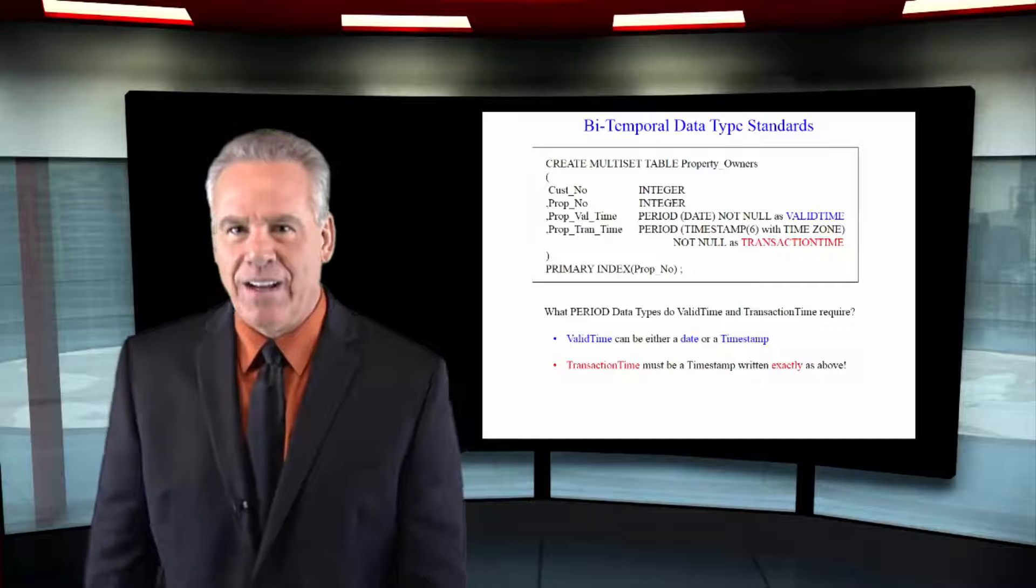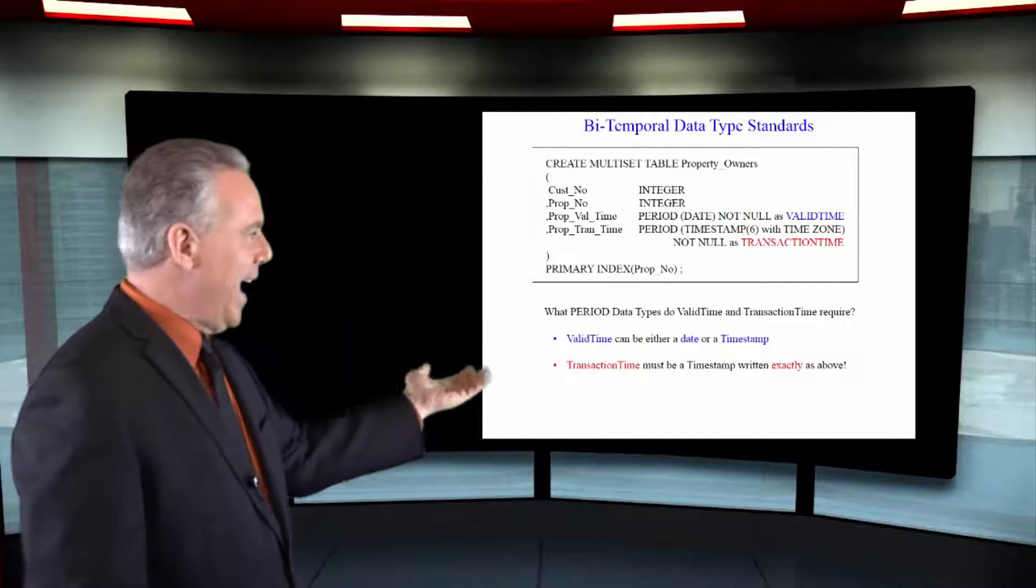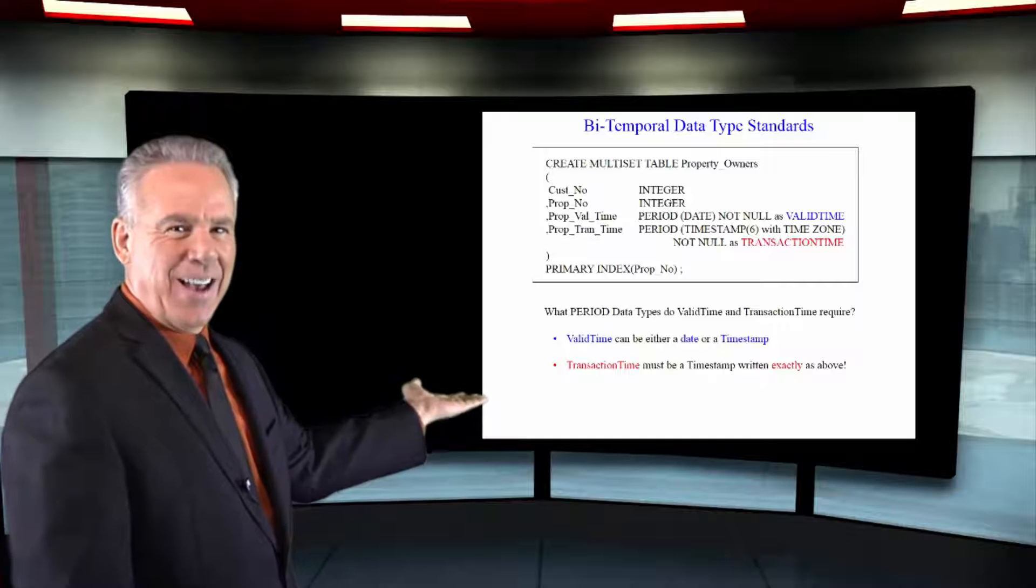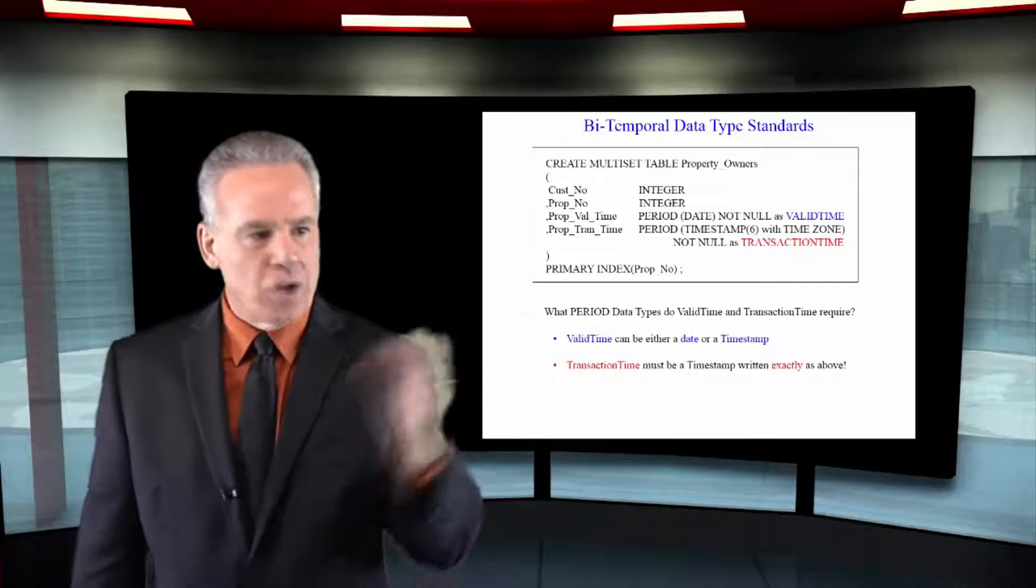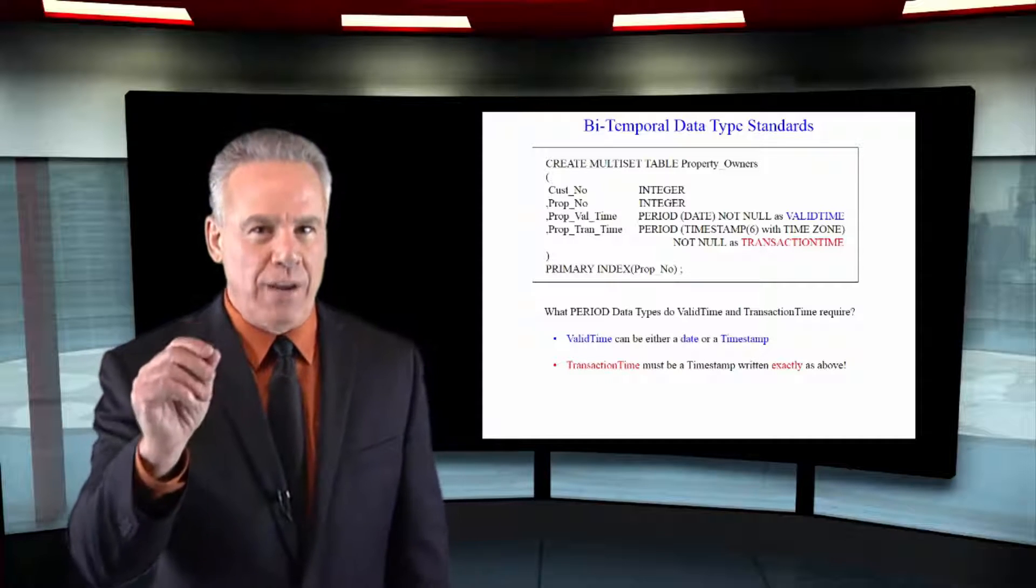Here I've highlighted in blue and red the keywords valid time and transaction time. And that's how Teradata knows these are period data types. I'm going to track these as temporal tables.